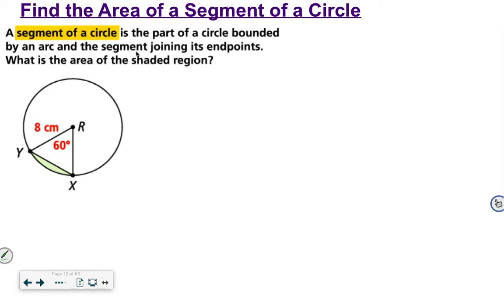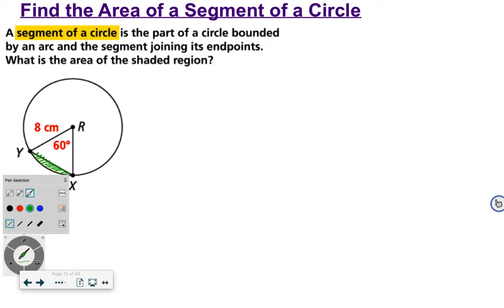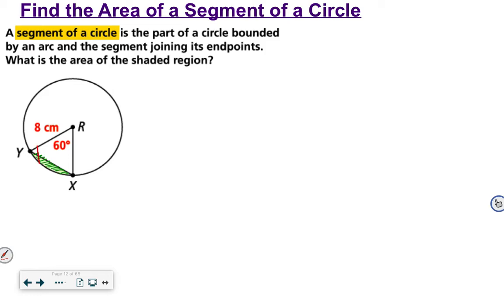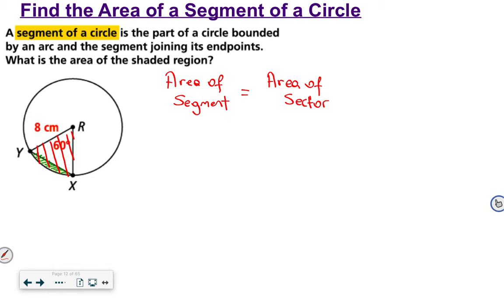In this part, we are going to find the area of a segment of a circle. A segment of a circle is this region here. To find the area of a segment, the main idea is: first calculate the area of the sector — we already learned how to find that — and then subtract the area of the triangle. So: area of segment = area of sector minus area of triangle.